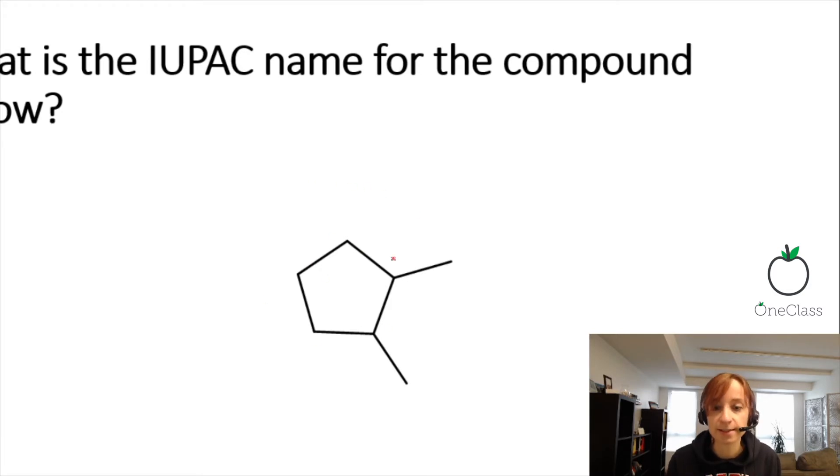Now looking at this, what I see first - we have two methyl groups. These are CH3s, so those are important to consider. As well, we have a carbocycle. This is a five-membered carbocycle, cyclopentane.